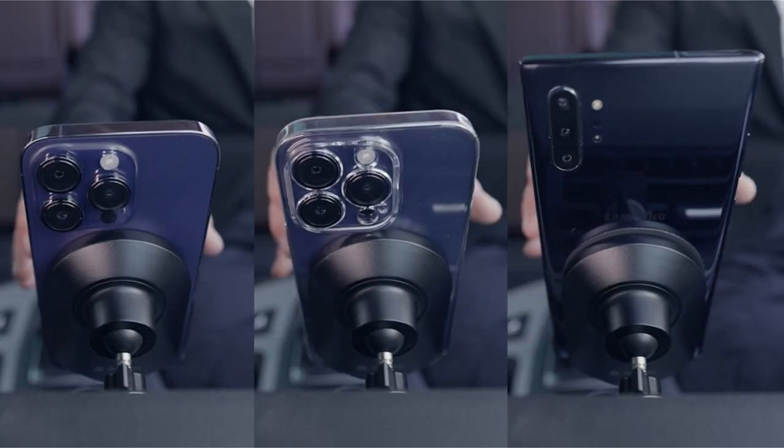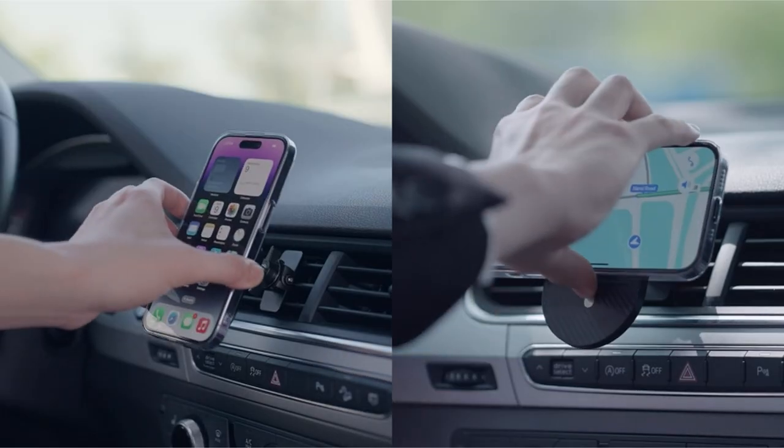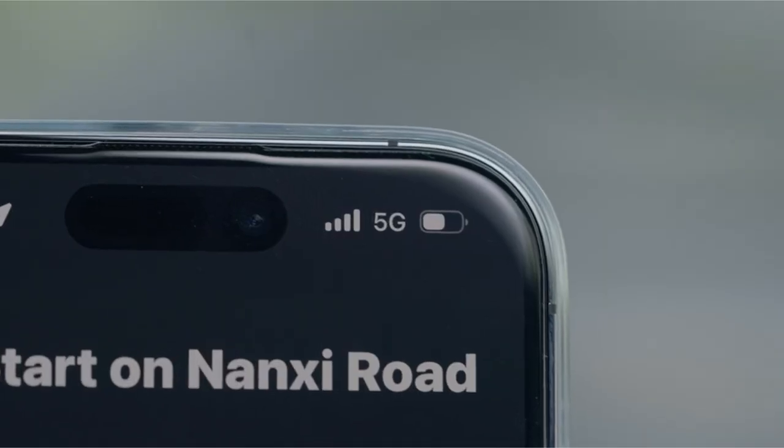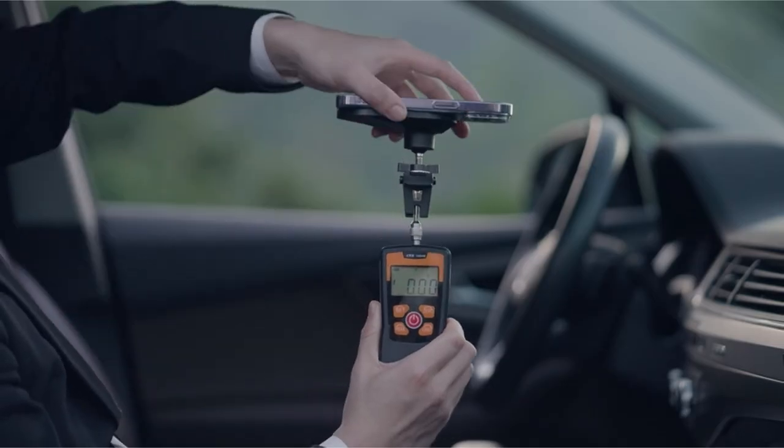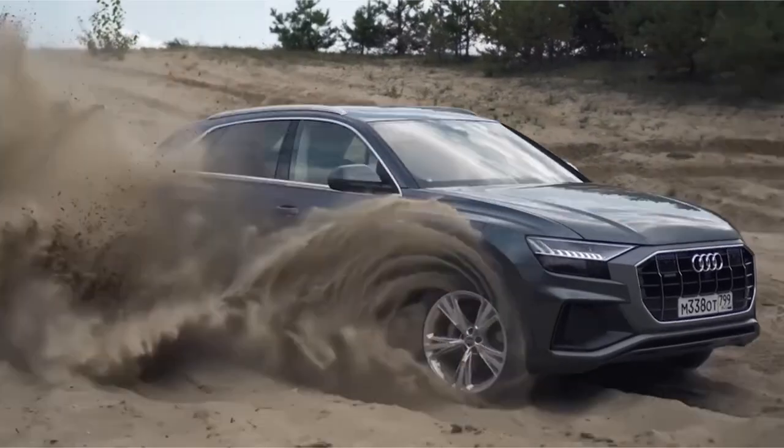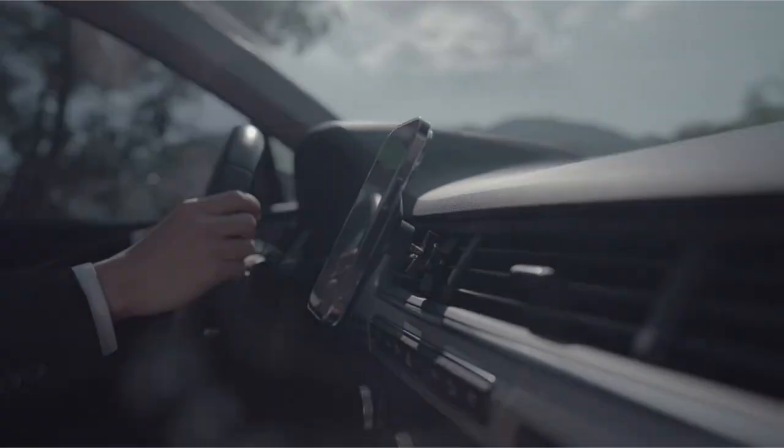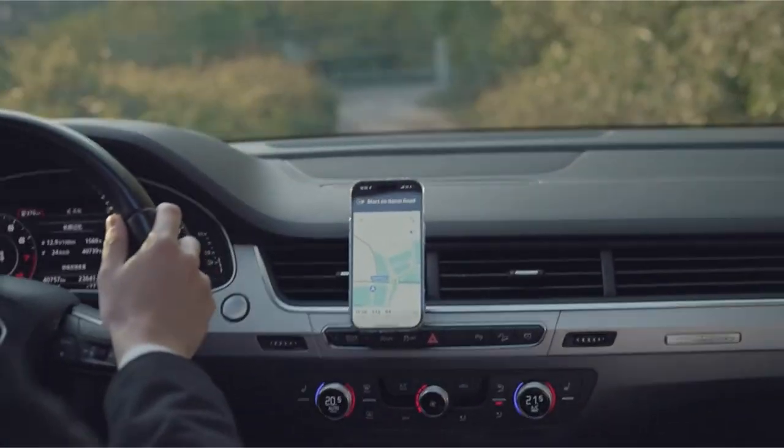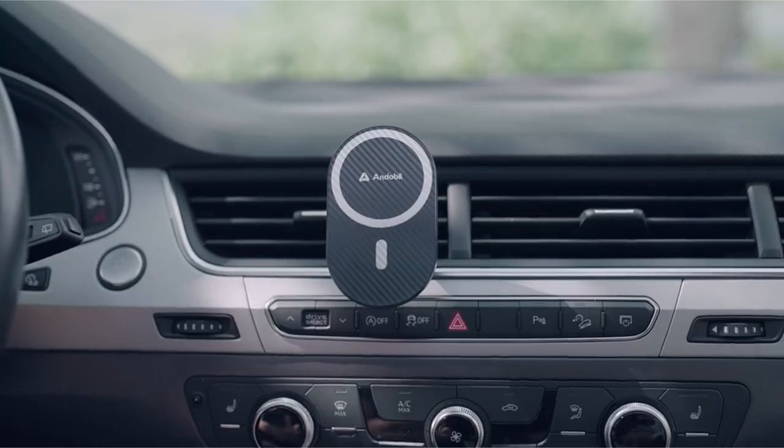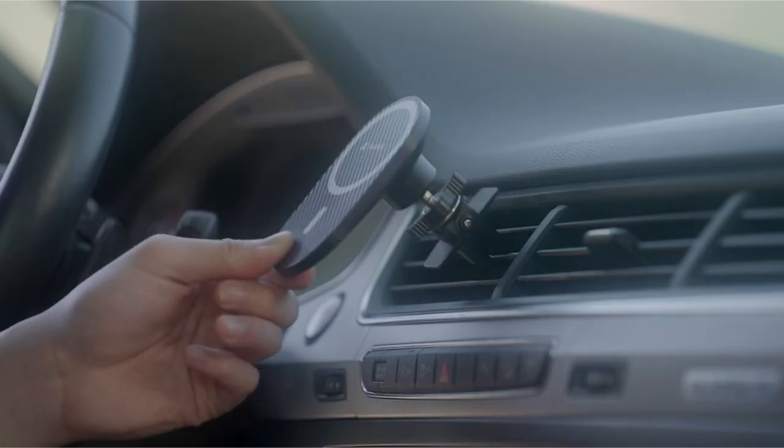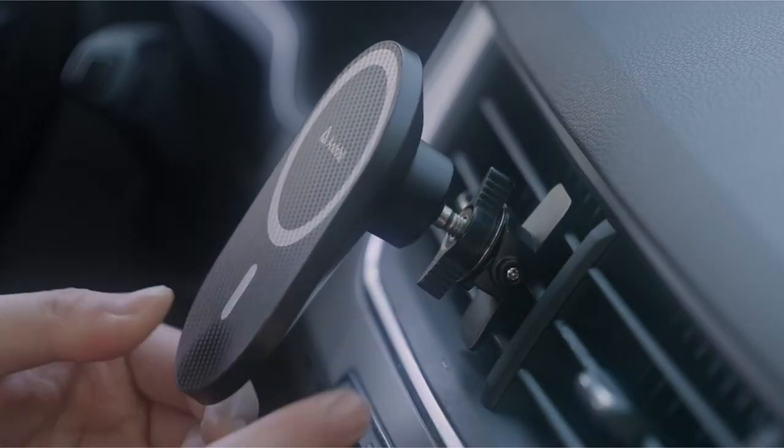The mount's 360-degree rotation ball joint provides unmatched flexibility, allowing you to find the perfect viewing angle for your phone. This feature, coupled with the secure grip, creates a safe and enjoyable driving experience. Andabill's commitment to quality is evident in every aspect of this product. The combination of durable materials and thoughtful design results in a car mount that is both reliable and user-friendly. If you're seeking a secure and versatile phone holder for your car, the Andabill MagSafe car mount is an excellent choice.